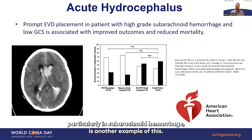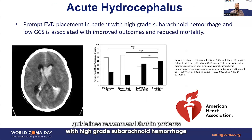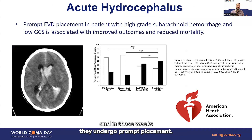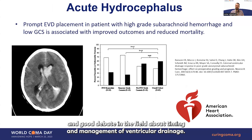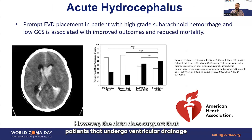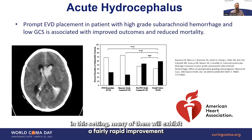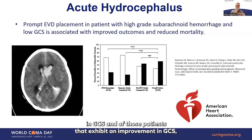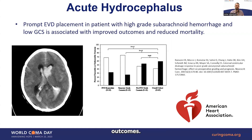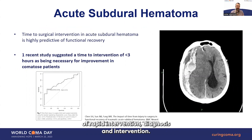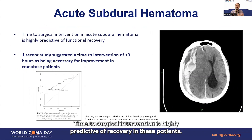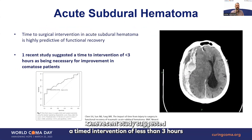Acute hydrocephalus, particularly in subarachnoid hemorrhage, is another example. The American Heart Association guidelines recommend that patients with high-grade subarachnoid hemorrhage and low GCS undergo prompt EVD placement. The data supports that patients who undergo ventricular drainage will often exhibit fairly rapid improvement in GCS, and many of those will go on to have relatively favorable outcomes. Acute subdural hematoma is perhaps one of the most important examples — time to surgical intervention is highly predictive of recovery, with one recent study suggesting intervention within three hours is necessary for improvement in comatose patients.